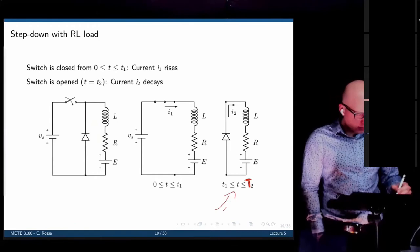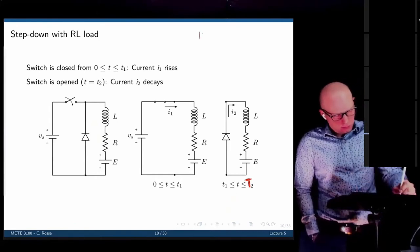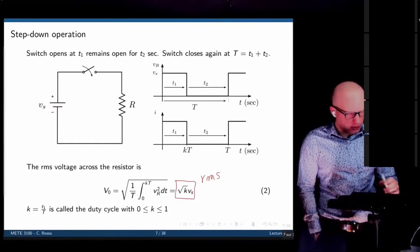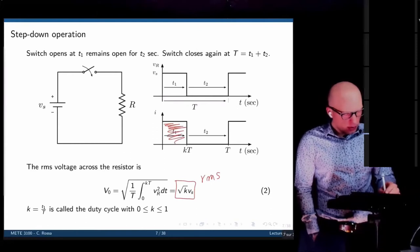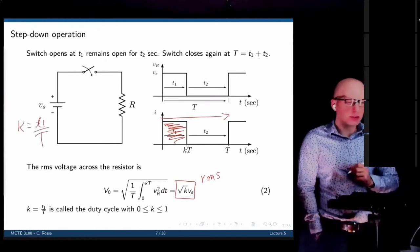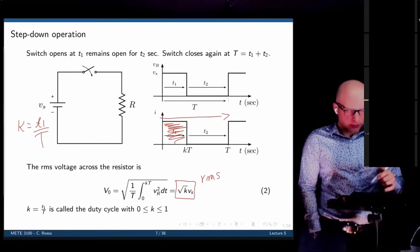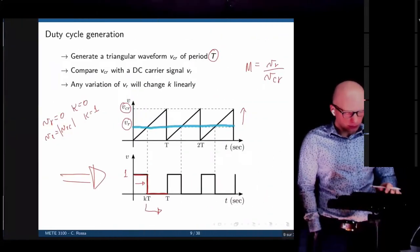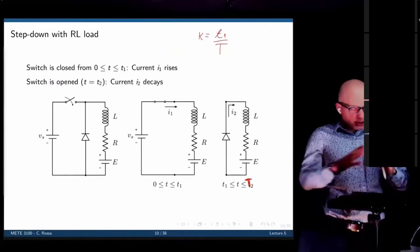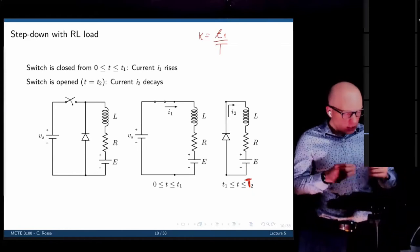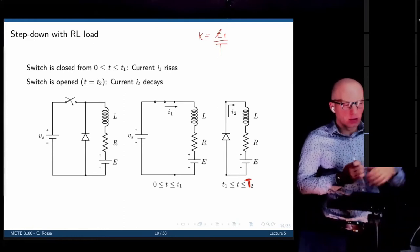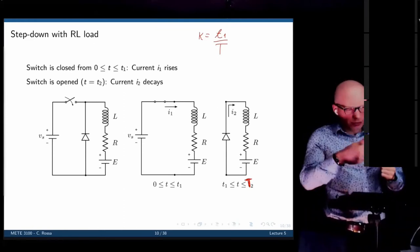The duty cycle is the ratio of how much percent of time the switch is on compared to the full period — T1 over T. When the switch is open, the inductor reverses polarity, current flows through the diode, and has a path to dissipate energy through the resistor. Let's analyze this circuit now. When the switch is closed, we apply Kirchhoff's law and assume there is an initial current I1 in the inductor.